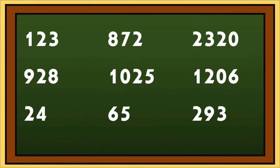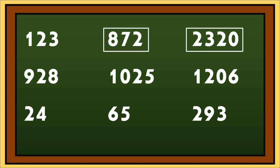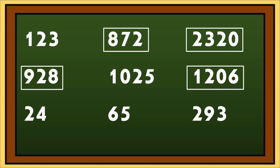Let's try. Which of these numbers are divisible by 2? Correct! The numbers that are divisible by 2 are 872, 2,320, 928, 1,206, and 24.